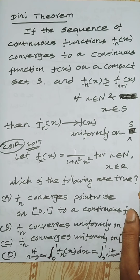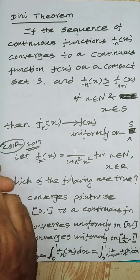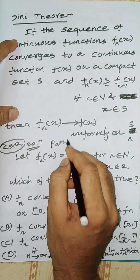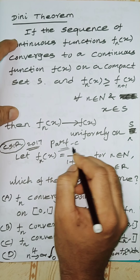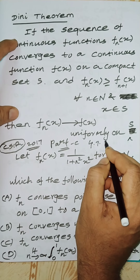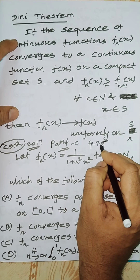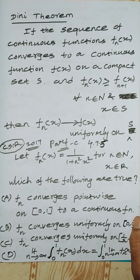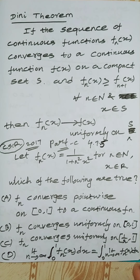This is a part C question, so you can earn 4.75 marks in the CSIF examination — and not only CSIF, but also Gate, TIFR examination, and SET examination.